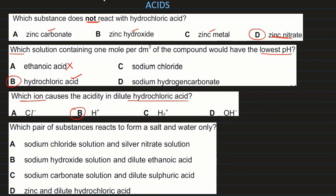Which pair of substances react to form a salt and water only? Sodium chloride solution and silver nitrate produce silver chloride and sodium nitrate — not salt and water. Sodium hydroxide and dilute ethanoic acid: a base and an acid react to form salt and water — that is the answer. Sodium carbonate reacts with sulfuric acid to give a salt, water, and carbon dioxide. Zinc reacts with dilute hydrochloric acid to produce a salt and hydrogen. So B (sodium hydroxide and ethanoic acid) is the answer as it produces salt and water only.